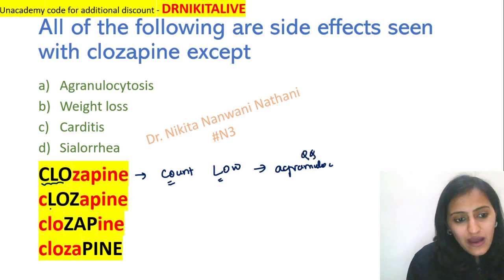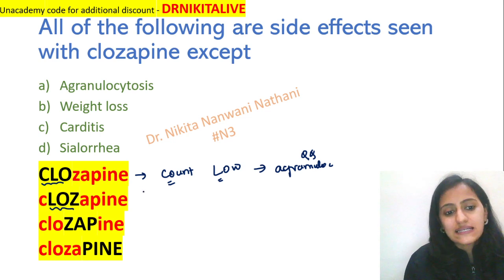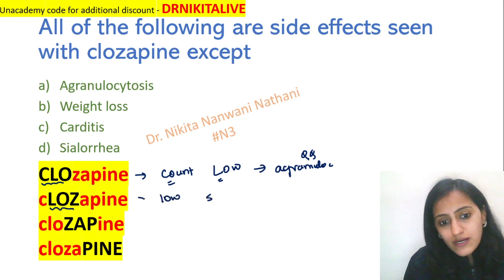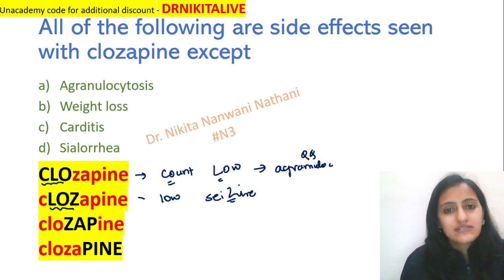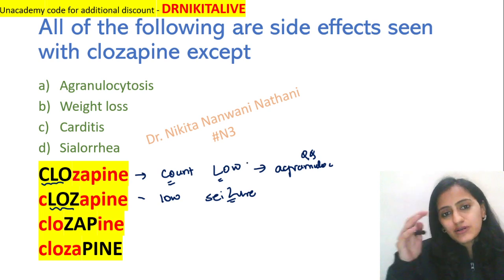Then the next letters L-O-Z stand for 'lower the seizure threshold.' Z is for seizures — Clozapine lowers the seizure threshold.